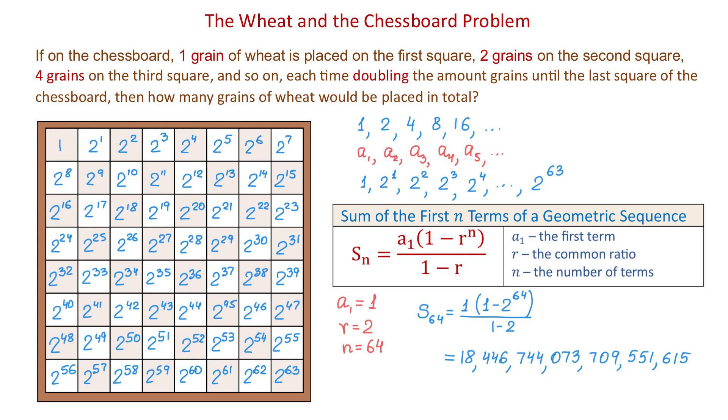Or to be more specific, that is 18 quintillion, 446 quadrillion, 744 trillion, 73 billion, 709 million, 551 thousand, 615. If we make a comparison, then this is close to 2000 times the current annual world production of wheat.